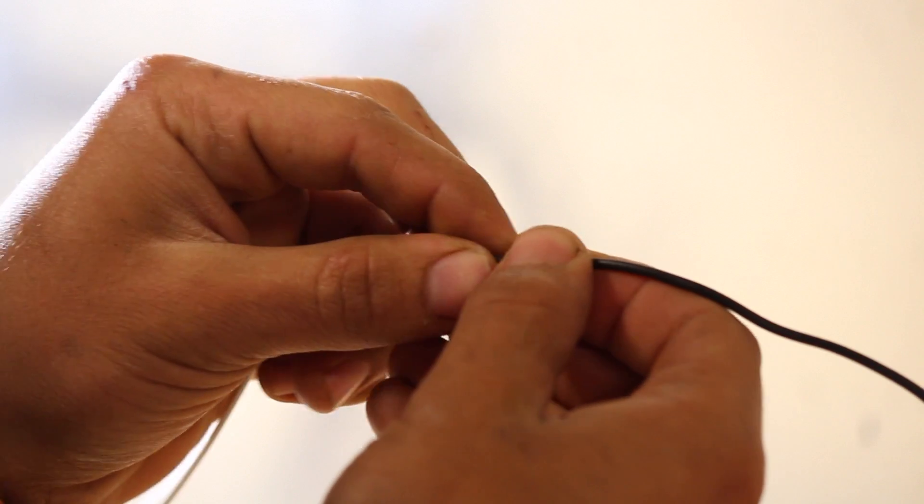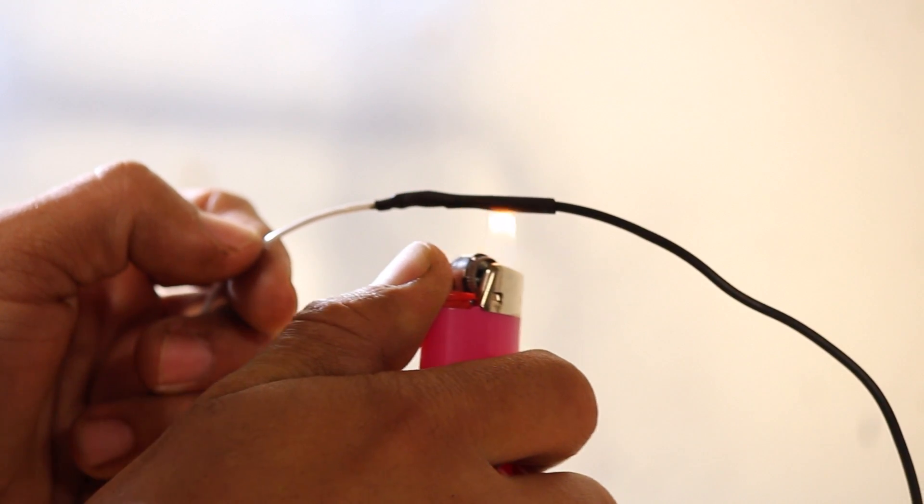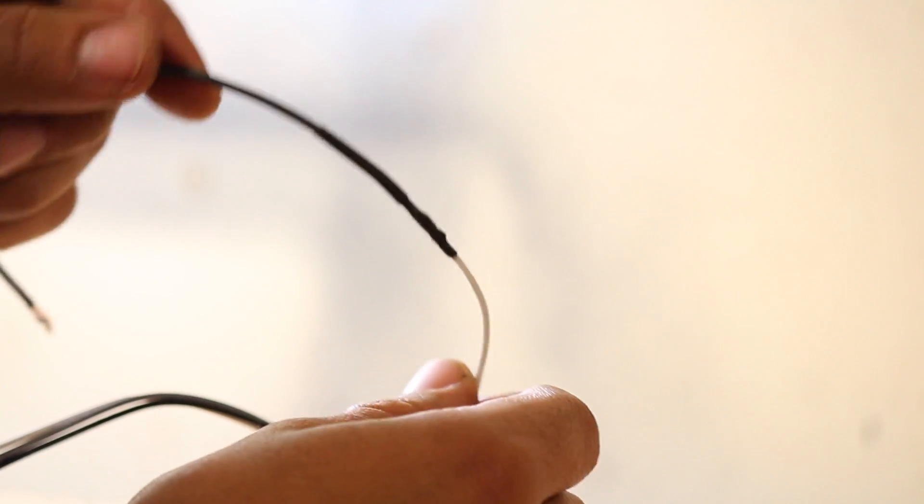Slide one piece of shrink wrap over the joint we just soldered. Grab a lighter and apply some heat to it so it shrinks and makes a watertight seal. That's how you get each one of the wires soldered. Repeat this step for the other end of the wire.